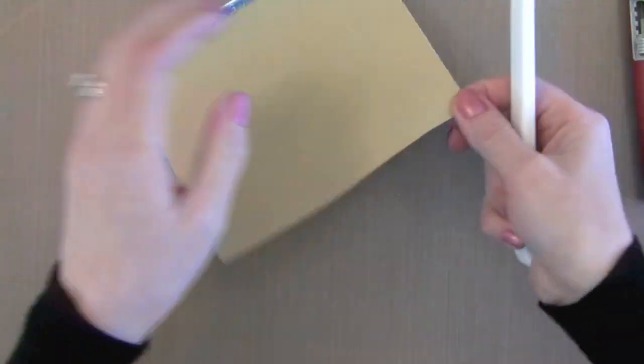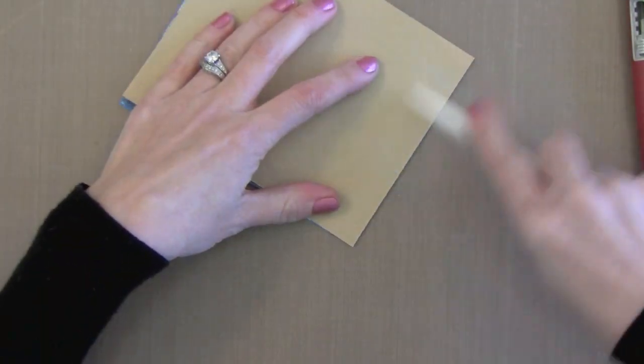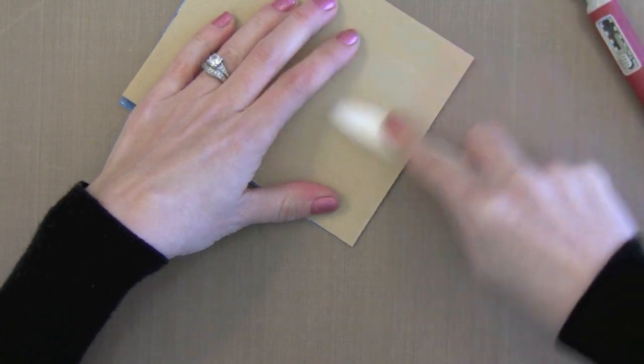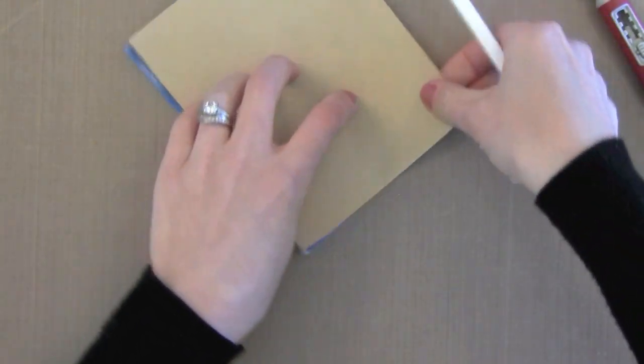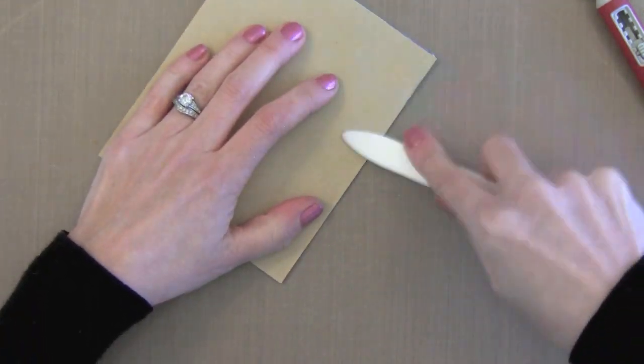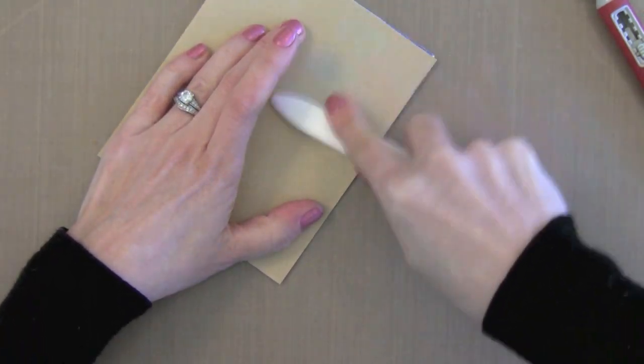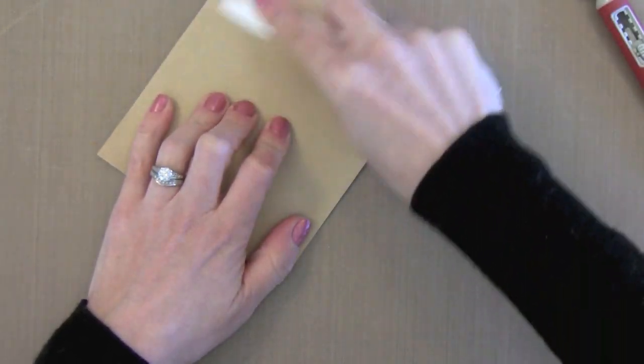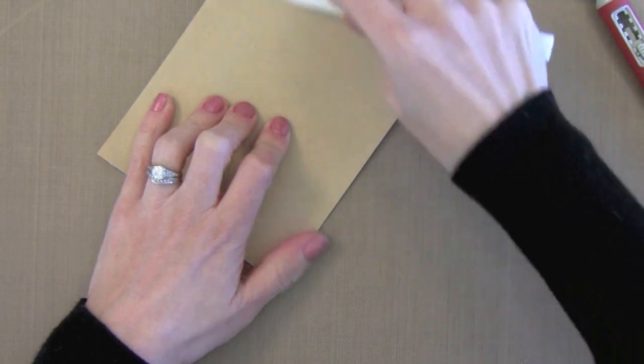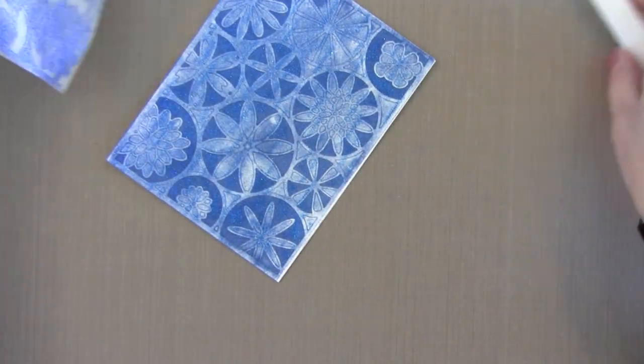First I'm going to take that piece of release paper, put it down and then burnish over this. This really presses the glitter into the tape. The reason I'm putting the release paper down is it won't stick to that, and also it keeps me from messing up any of the release paper that's still on my piece. I want to keep it nice and clean. If I didn't put this release paper down I might mess it up with my bone folder.